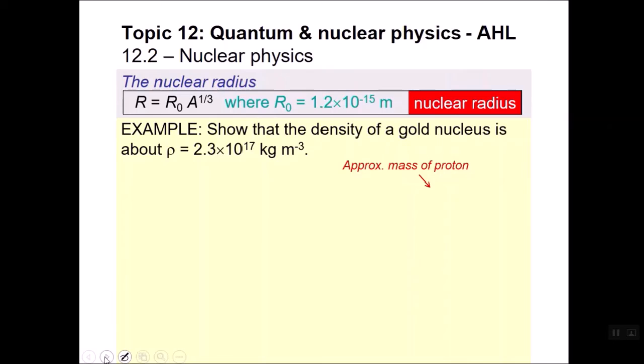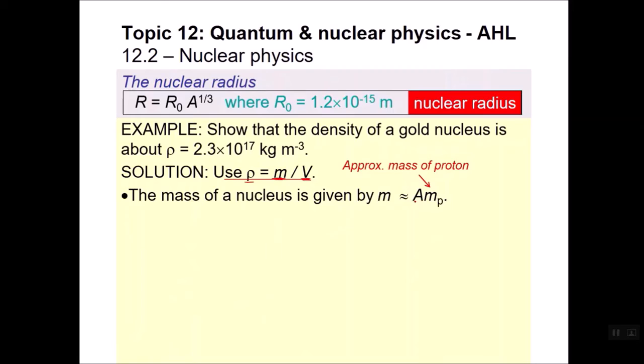So here's a sample problem. Show that the density of a gold nucleus is about 2.3 times 10 to the 17th kilograms per cubic meters. So we're going to use the equation: density equals mass divided by volume. We have to derive, we're going to have the mass of the proton. We're going to have the mass of the volume, we're going to need to calculate that. So the mass of the nucleus is given by, on average, the number of protons divided by the rest mass of a proton.